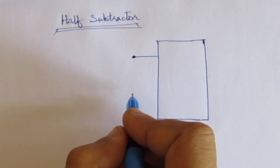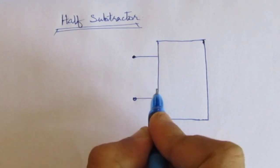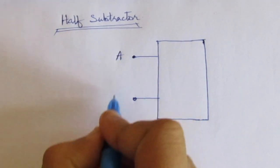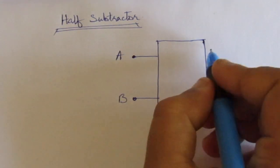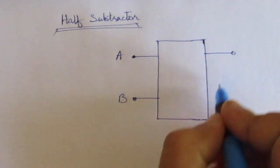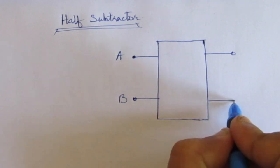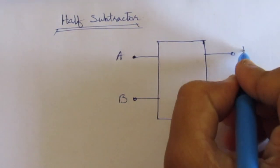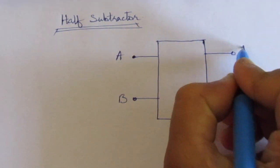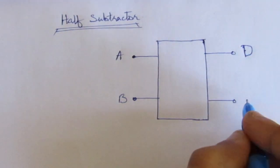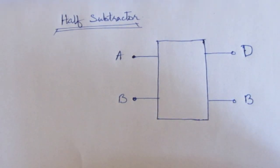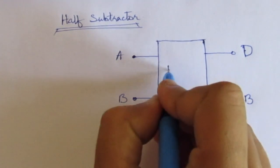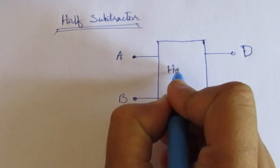These are the two bits, input A and B, and these are the two outputs. One is the difference, denoted by capital D, and another is the borrow, denoted by capital B. So, this is the half subtractor.